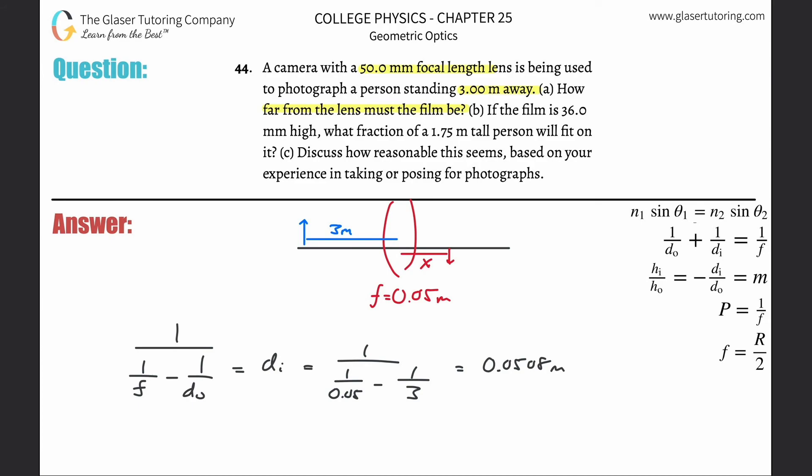In other words, about 5 centimeters from the center of the lens. So it says now if the film is 36 millimeters high, what fraction of a 1.75 meter tall person will fit on it?